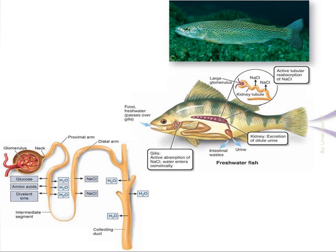A freshwater fish maintains osmotic and ion balance in its dilute environment by actively absorbing sodium chloride across the gills; some salt is also gained with food. To flush out excess water that constantly enters the body, the glomerular kidney produces dilute urine by reabsorbing sodium chloride. A marine fish must drink sea water to replace water lost osmotically to its salty environment. Sodium chloride and water are absorbed from the stomach, excess sodium chloride is actively transported outward by the gills, and divalent sea salts — mostly magnesium sulfate — are eliminated with feces and secreted by the tubular kidney.